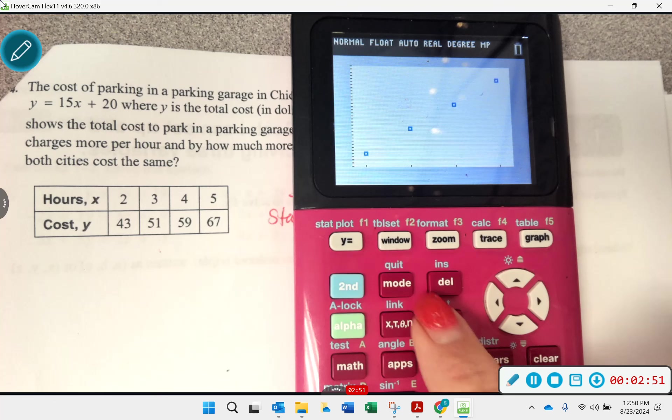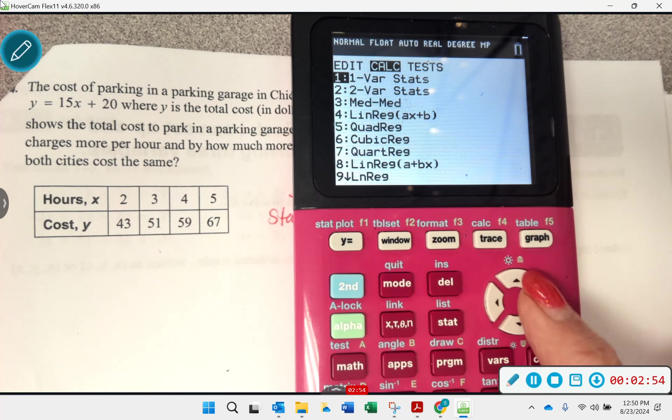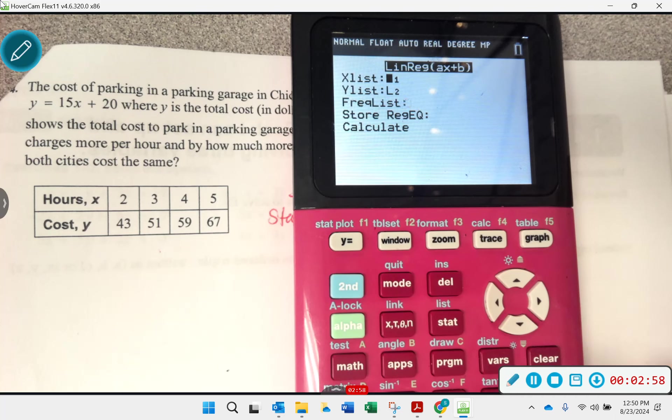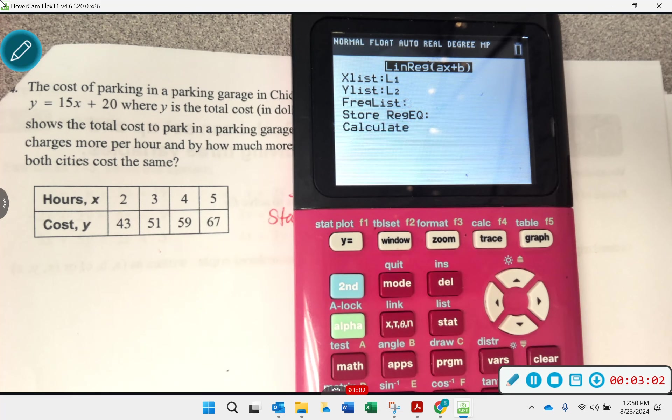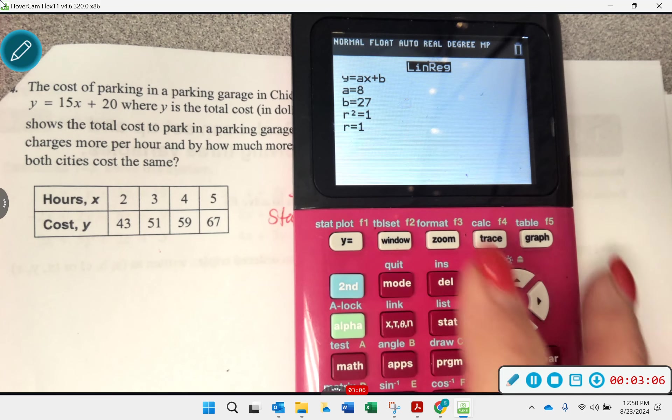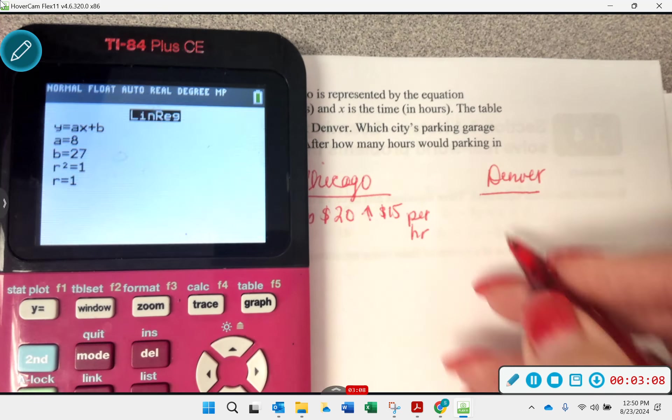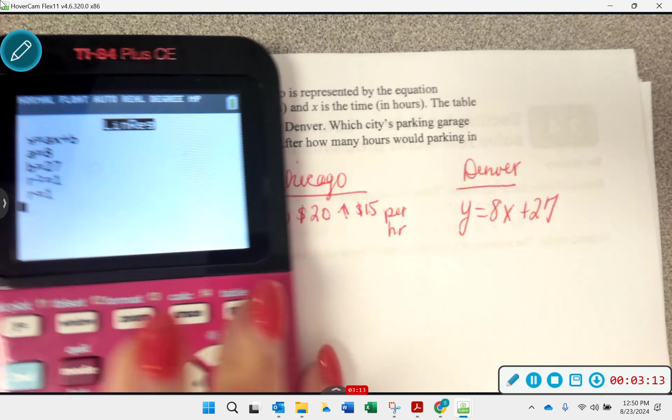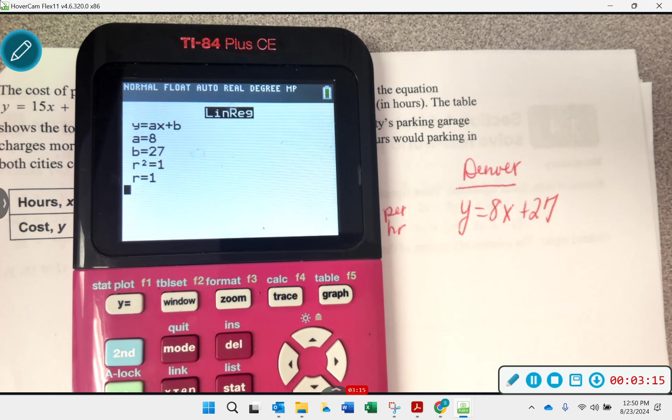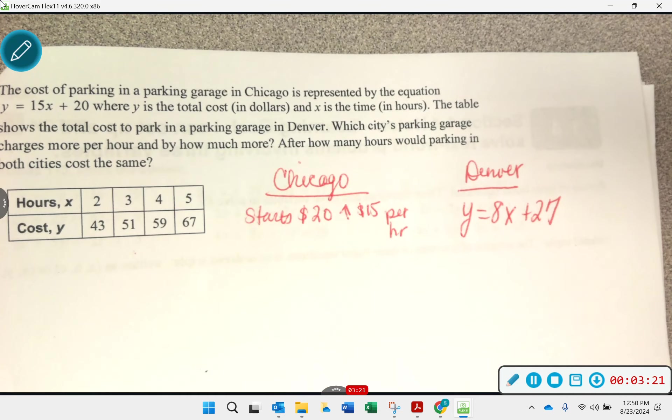Okay, so now I want to come up with my equation. So I'm going to do stat, calculate, linear regression, and I can calculate that. And here's what we get. Is it a strong correlation coefficient? Very strong. In fact, it's perfect. Okay, so we got that.